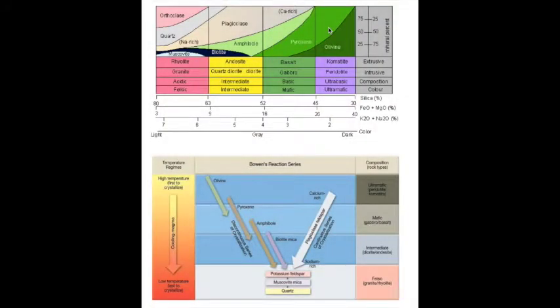This relationship is summarized by Bowen's reaction series flowchart, which is present in your lab readings. Those minerals with a low silicate content and high iron and magnesium content, on this side of the diagram, crystallize or freeze at higher temperatures than those minerals with a high silicate content and low iron and magnesium content, on this side of the diagram.